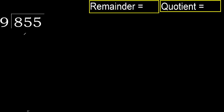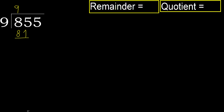855 divided by 9. 8 is less, therefore next 85. 85 is not less, therefore with 85: 9 multiplied by which number is nearest to 85 but not greater? 9 multiplied by 9 is 81, which is not greater. 85 minus 81 is 4.